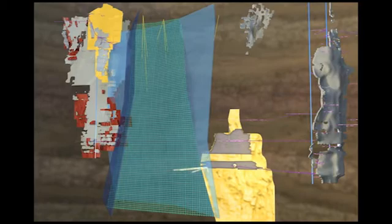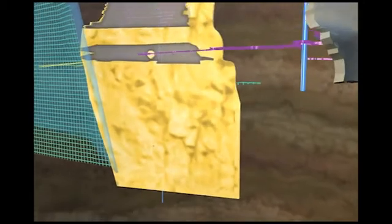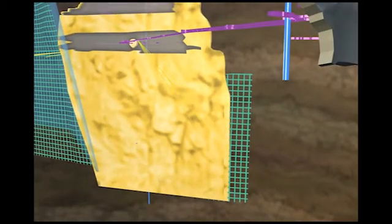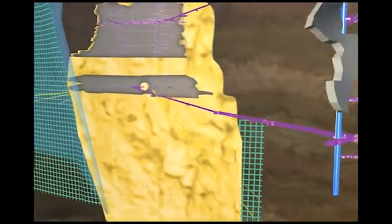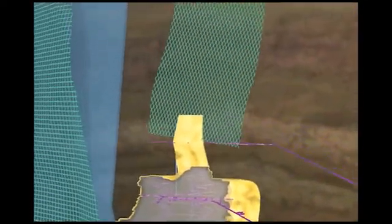The current resource outline at Lucky Friday is also open to the east, where there is potential to expand the boundaries of the resource. We'll put several drill holes into this area to define the true extent of the resource to the east.